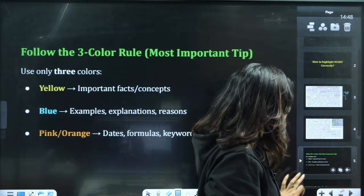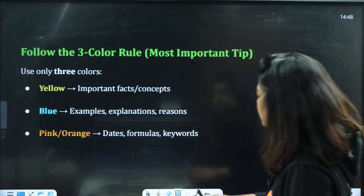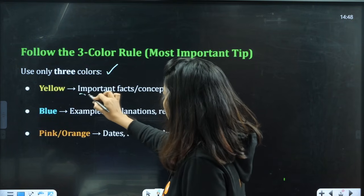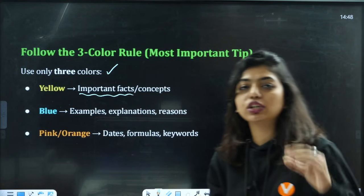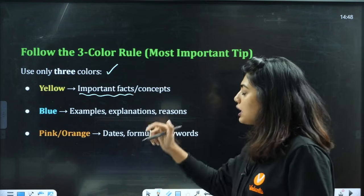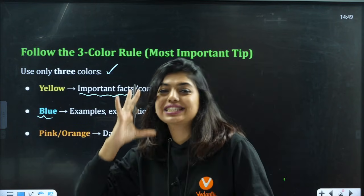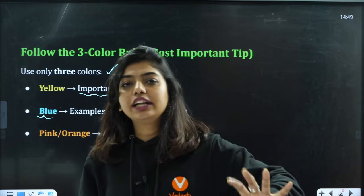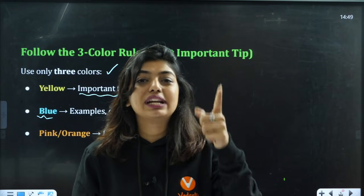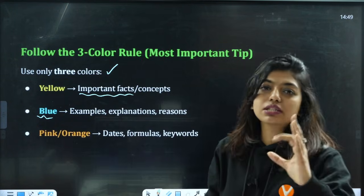There are some important things you have to follow. Follow the three-colour rule — most important tip: use three colours to highlight. For example, yellow for important facts and concepts. You can change the colours according to your wish, but keep a very standard colour — three standard colours for all chapters. Don't use a mix of colours, because whenever you see blue colour you will remember it is an example, and whenever you see green colour you will remember it is an exception. So keep your colours fixed.